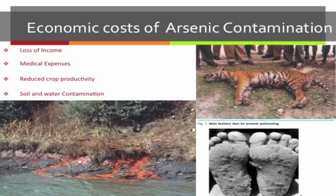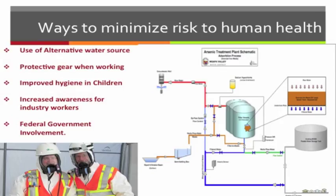Ways to Minimize Risk to Human Health. These include use of an alternative water source if arsenic levels in surface water and groundwater exceed 10 parts per billion, and use of personal protection gear. Hand washing should be encouraged to reduce children's potential exposure to arsenic in soil. The government needs to provide updated information on arsenic levels so people can take adequate precautions. The federal government can also set limits on the amount of arsenic industries can release and restrict the dose of arsenic in pesticides. The EPA successfully banned inorganic arsenic in 1993, while organic arsenic was banned in 2009.